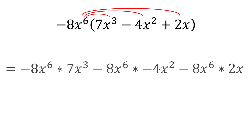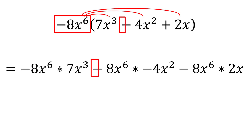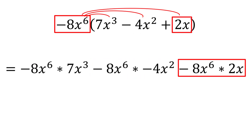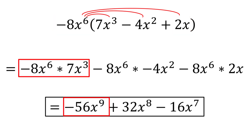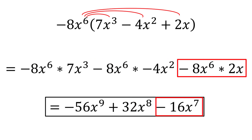The result is negative 8x to the sixth multiplied by 7x to the third, minus 8x to the sixth multiplied by negative 4x squared, minus 8x to the sixth times 2x. This becomes negative 56x to the ninth plus 32x to the eighth minus 16x to the seventh, which is our final simplified expression.